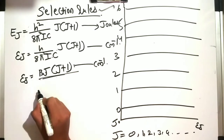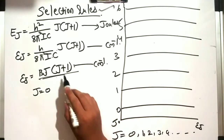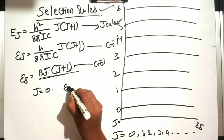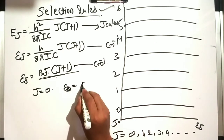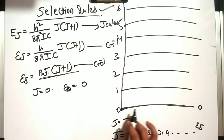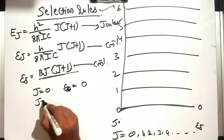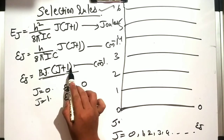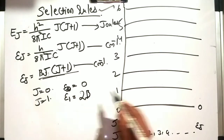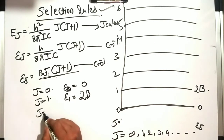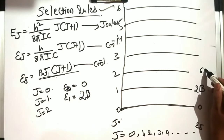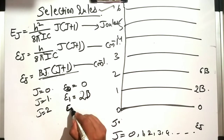In this equation, when j equals 0, we get 0 times 1, so the whole thing is 0 — epsilon_0 equals 0. When j equals 1, we get 1 plus 1 equals 2, times 1 equals 2, so E_1 equals 2B. When j equals 2, we get 2 plus 1 equals 3, times 2 equals 6, so epsilon_2 equals 6B.